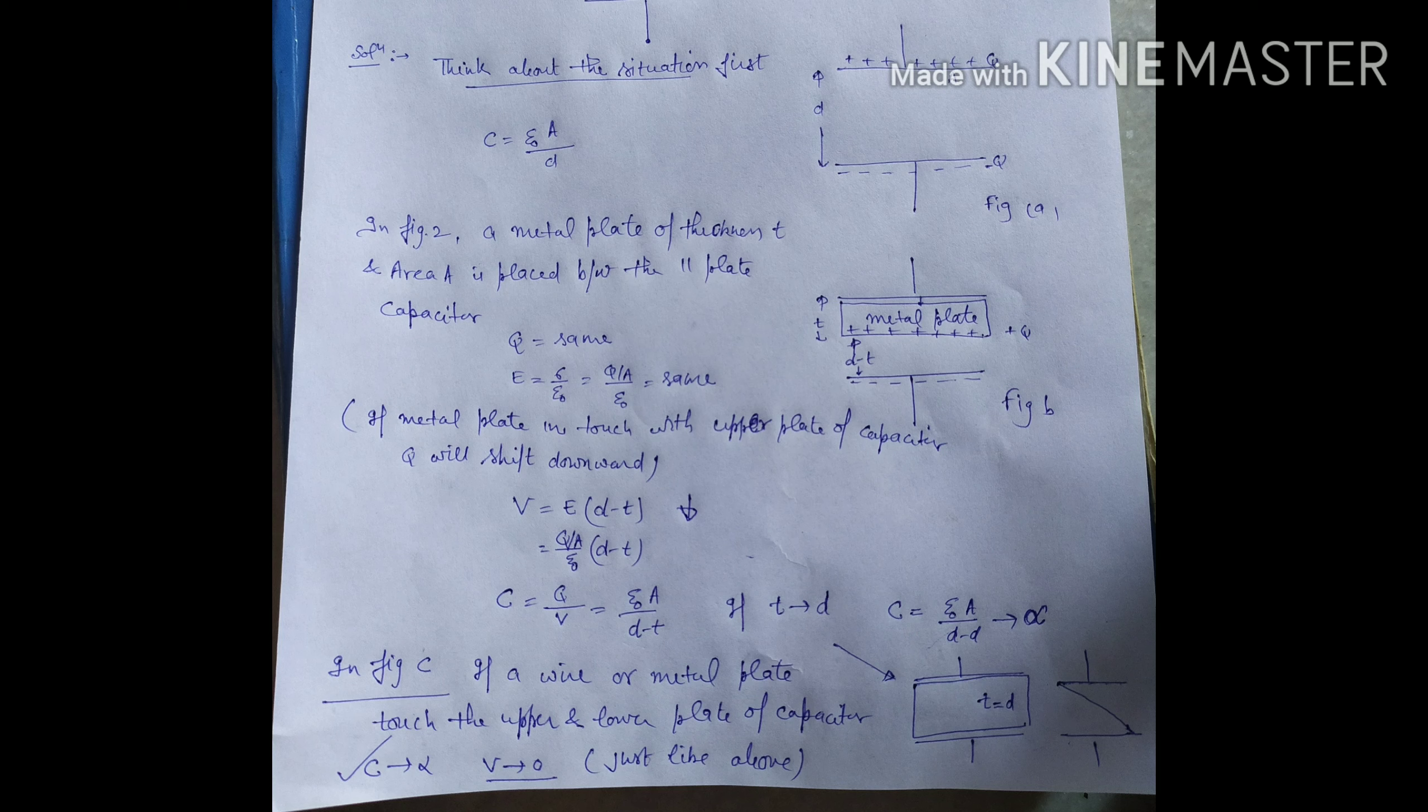The field remains the same as the metal plate is inserted. When the plate touches the positive plate, charge will come to the surface. The effective capacitance becomes epsilon not A upon D minus T.